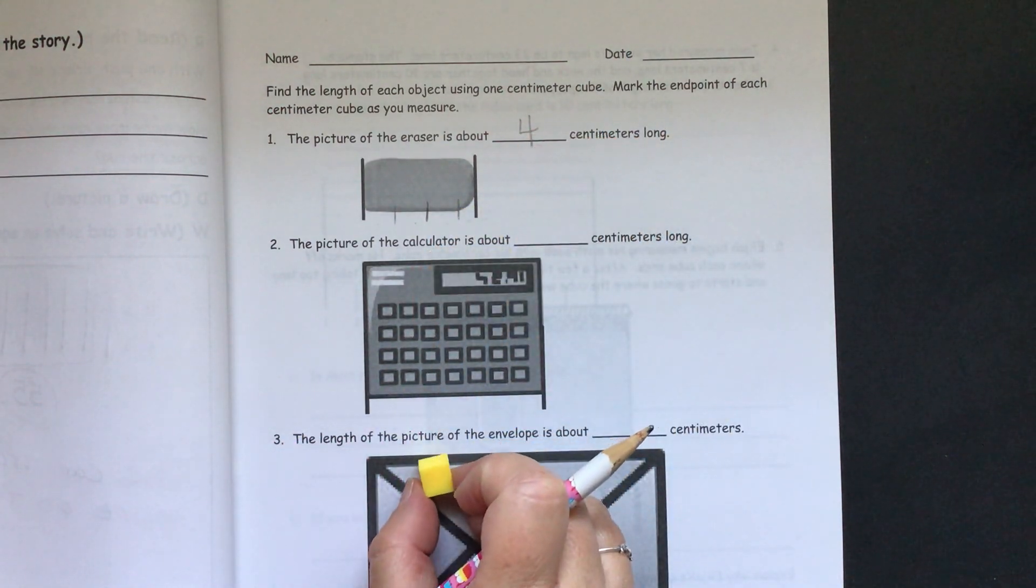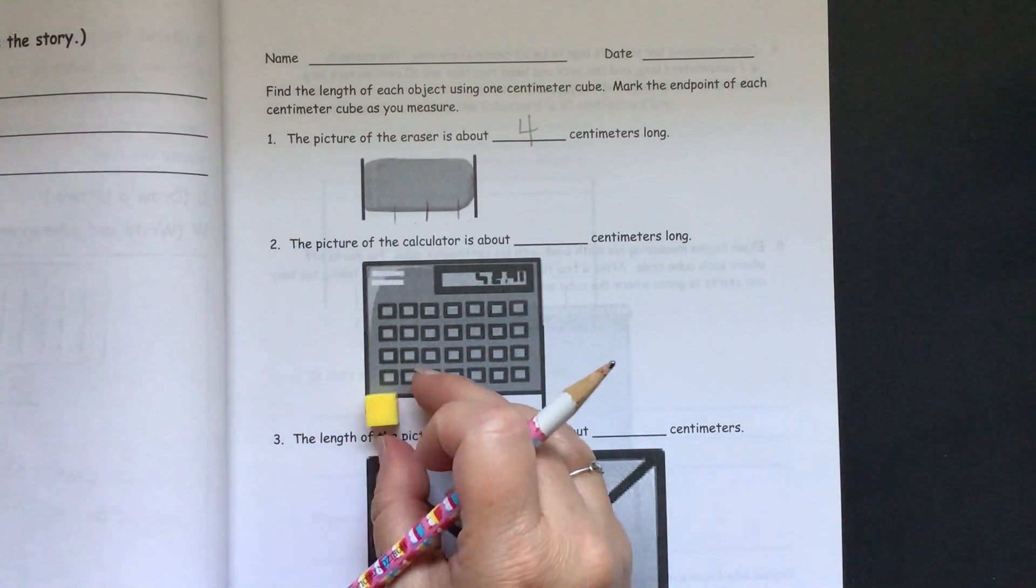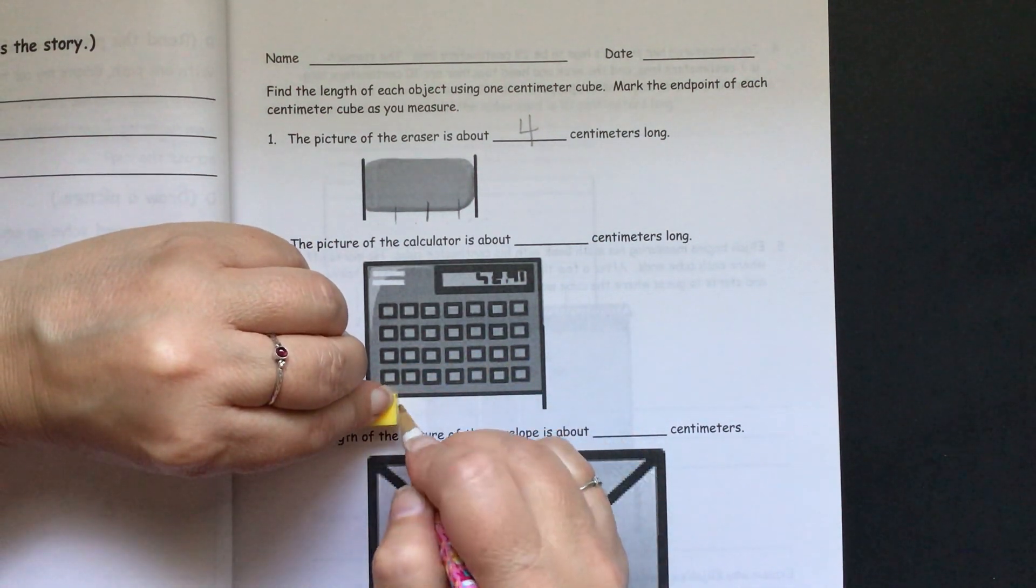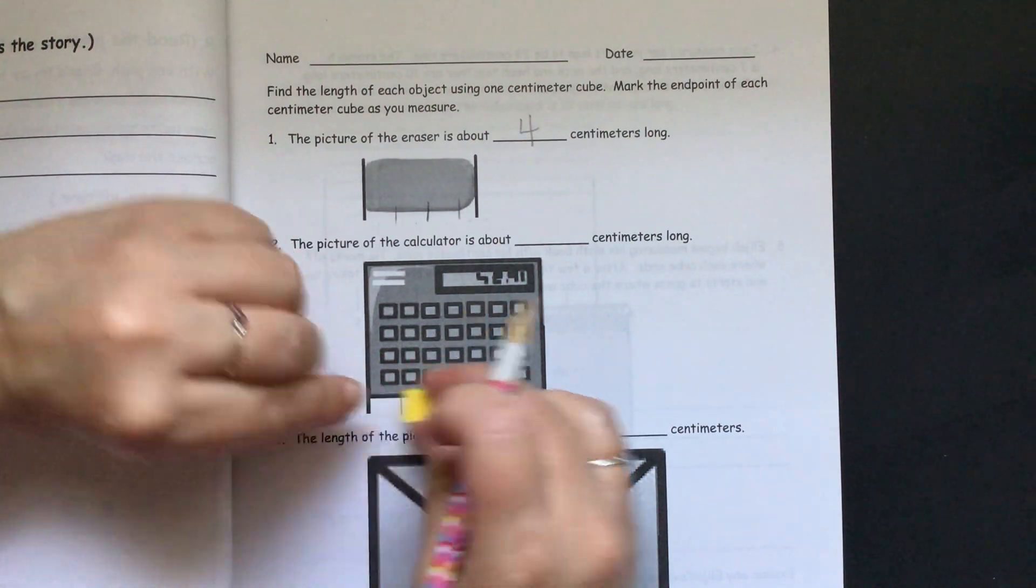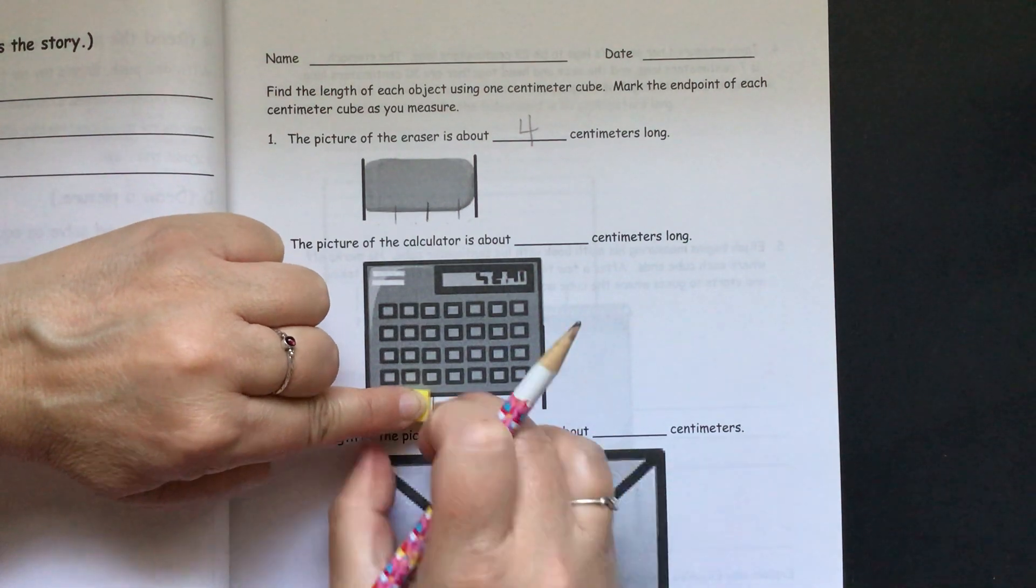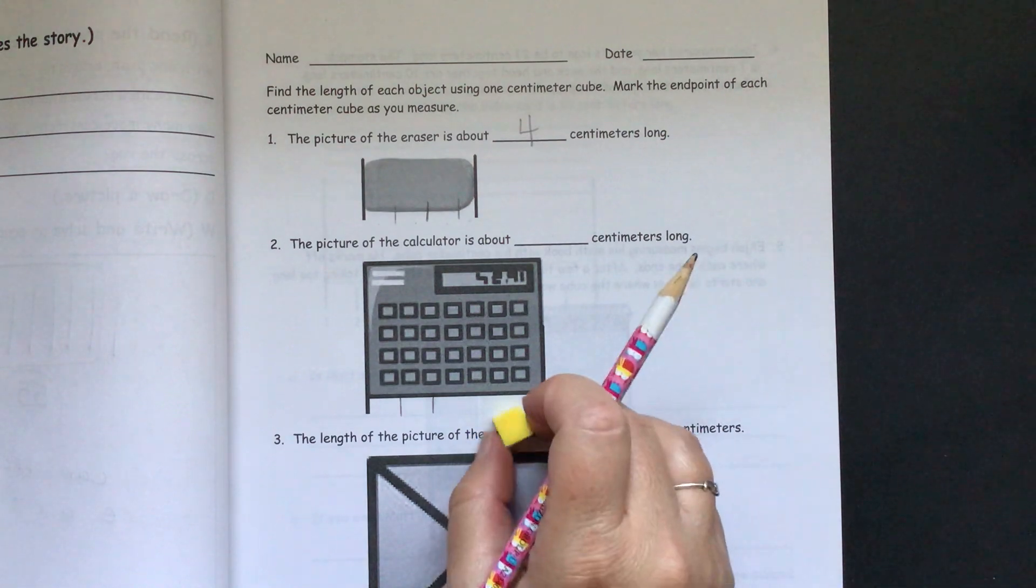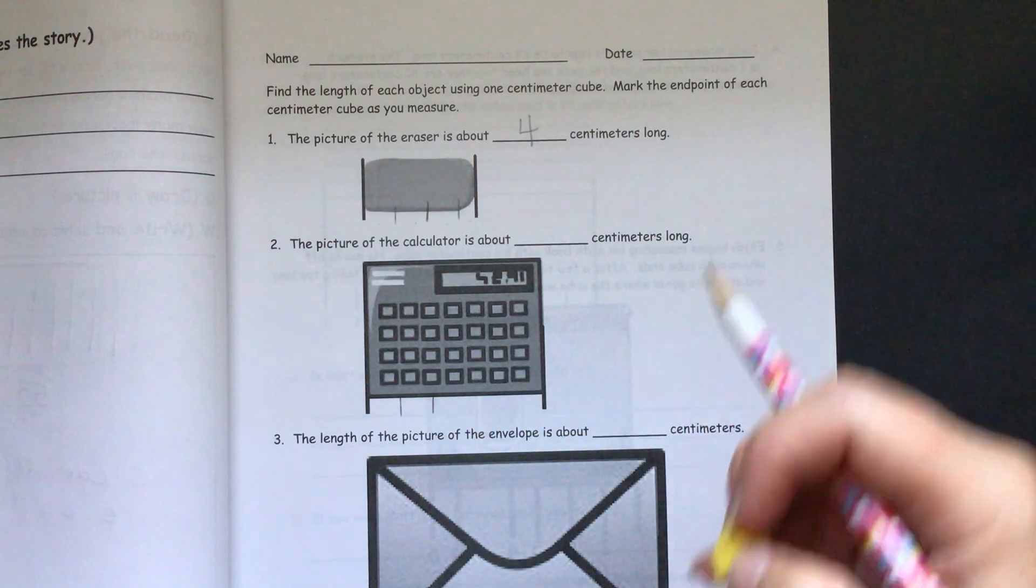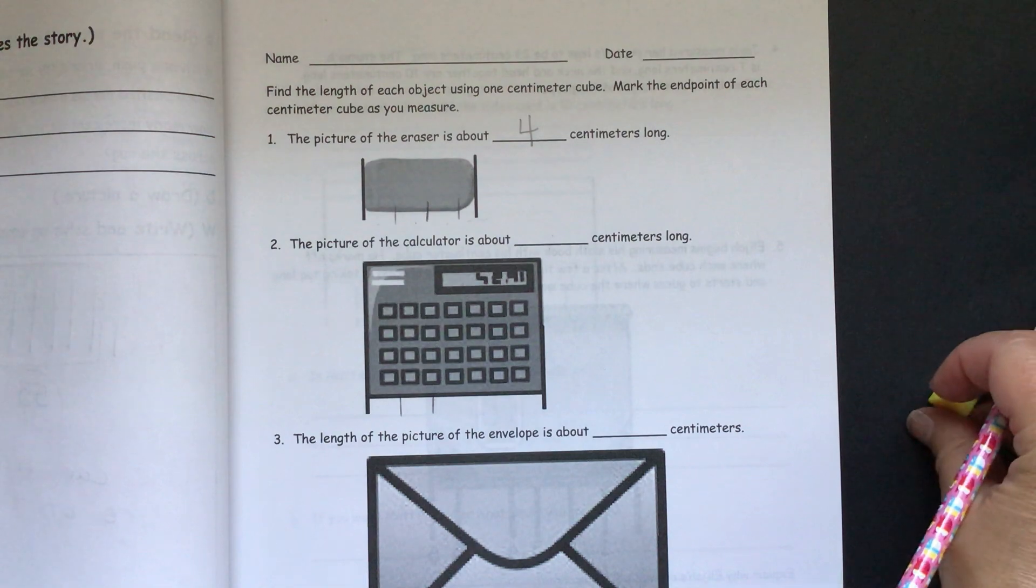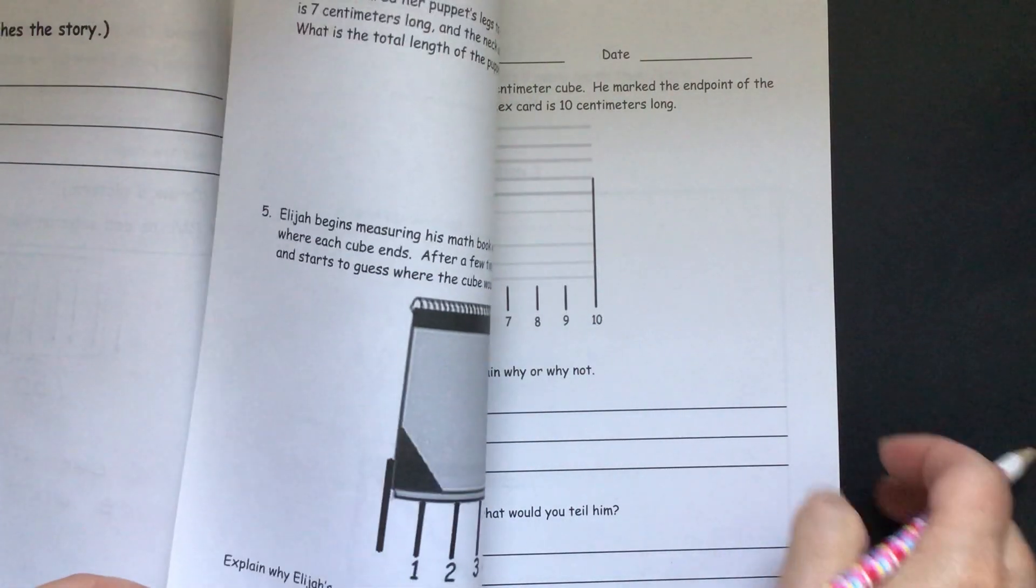So you'll need to do the same thing with this calculator where you line up your cube with the line here. And then you make your mark. And then you line up your cube with the mark you made and make another mark. And you keep doing that all the way across until you have finished to the line. And then count how many you have and put that on the line here. And then you can do it with the envelope they have here. So let's go to the next page.